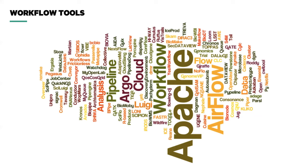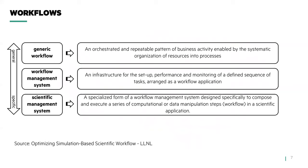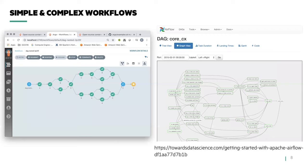Where to start when picking a workflow application? The website Awesome Pipeline lists approximately 150 or so tools concerned with workflows. We can break down workflows into three different categories: generic workflow agents, workflow management systems, and scientific management systems. Some are specialized to certain application domains such as genomics, whereas others are more generic, such as Argo and Apache Airflow. On the left we show an Argo nested DAG taken from the Argo examples. On the right, a more complex data science example from the Apache Airflow community.